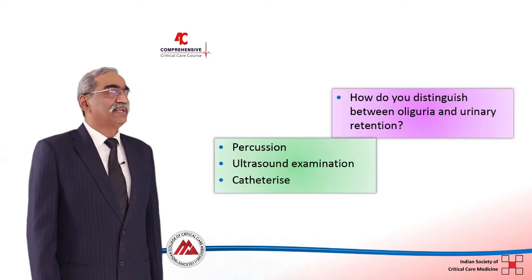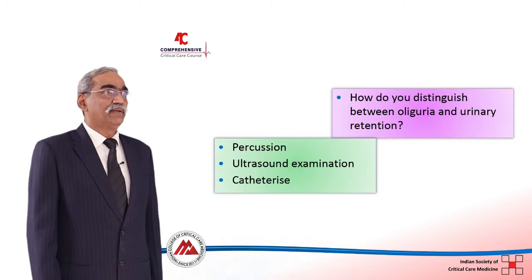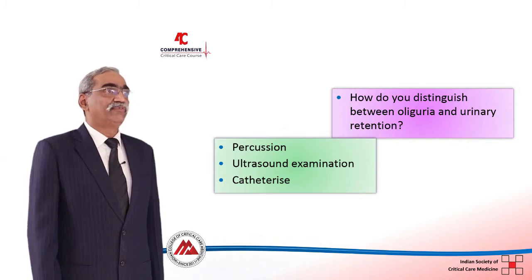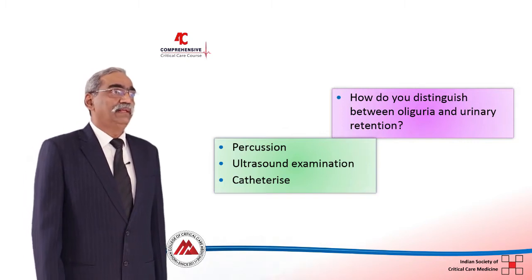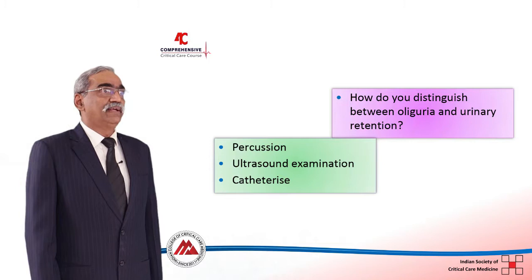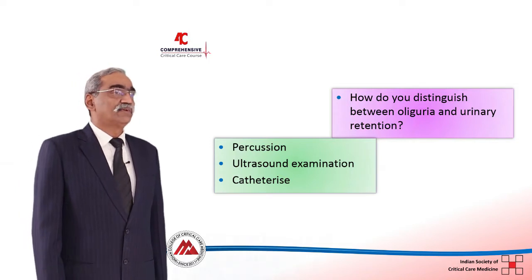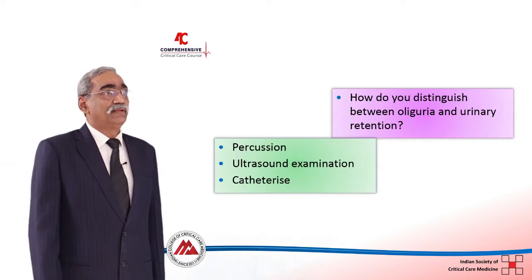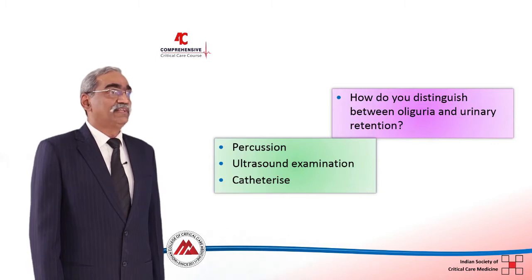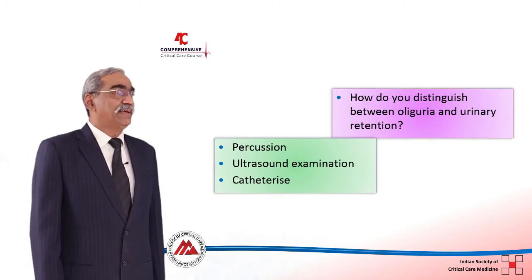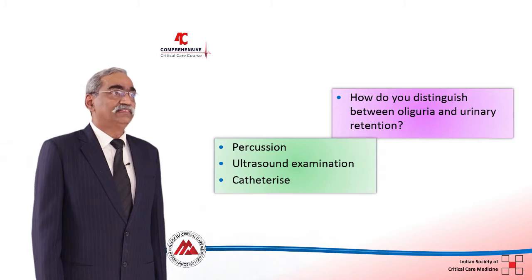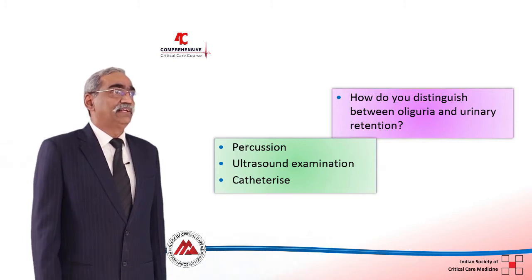This is best done by percussing the hypogastrium, the pelvic region, and seeing if the dull note on percussion indicates a full bladder. An ultrasound examination, now available in all ICUs, makes it very easy to pick up a distended bladder. If that is so, then catheterize and find out how much urine is present — the oliguria may be solved simply by catheterizing the patient.